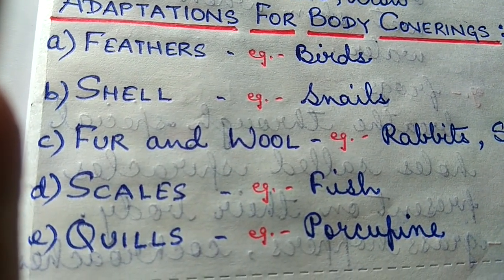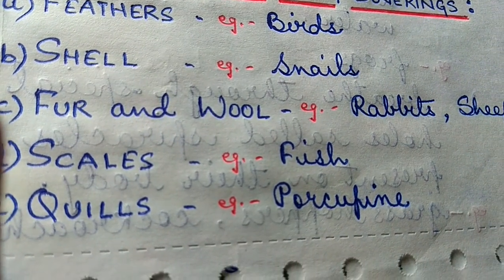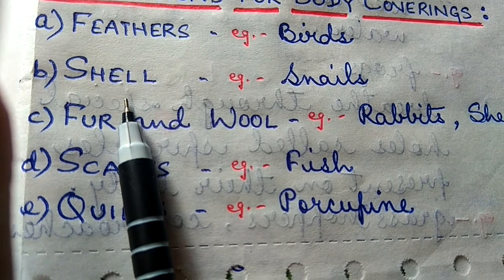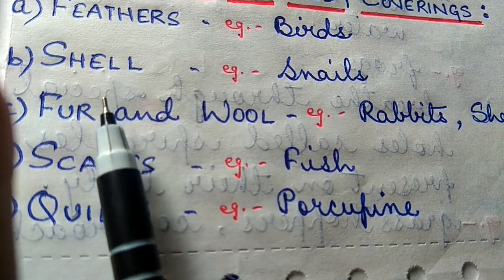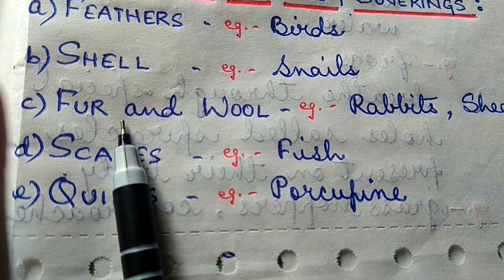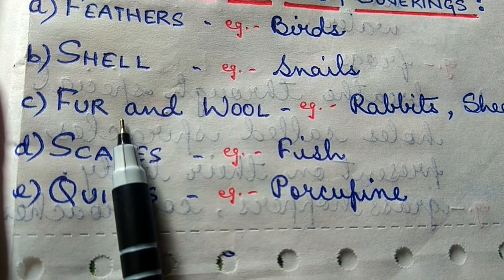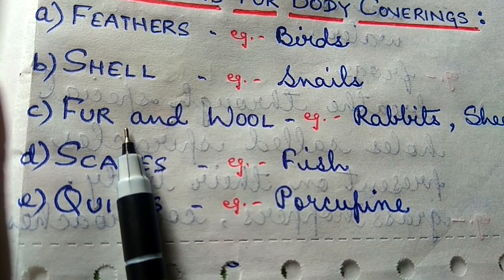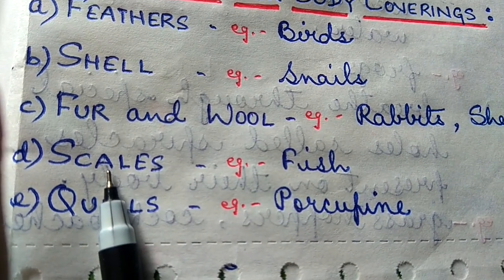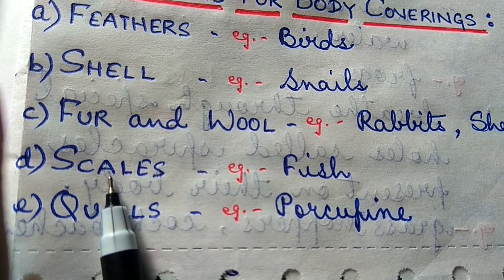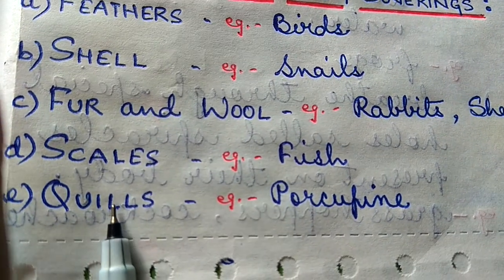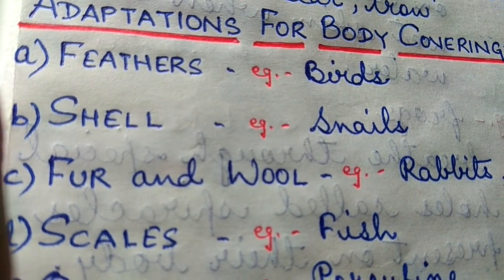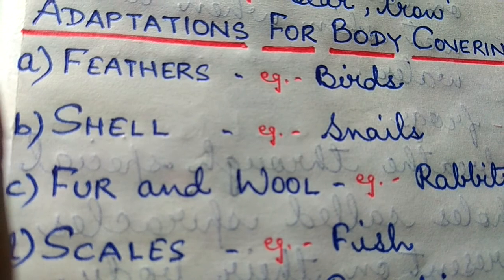Feathers: birds have different types of feathers on their body. Some feathers help them to fly; other feathers protect them from rain and cold. Next, shell: animals such as snails have a shell on their body which they use to protect themselves when in danger. Next, fur and wool: animals such as bears and rabbits have fur on their body which helps them keep warm and protect them from rain. Animals like sheep have wool on their body to keep warm. Next, scales: animals like snakes and fish have scales on their body to protect their soft body. Quills and cuticles: a porcupine has sharp needle-like spines called quills on its body, and some insects have cuticles which is a water-resistant covering; example, armadillo.